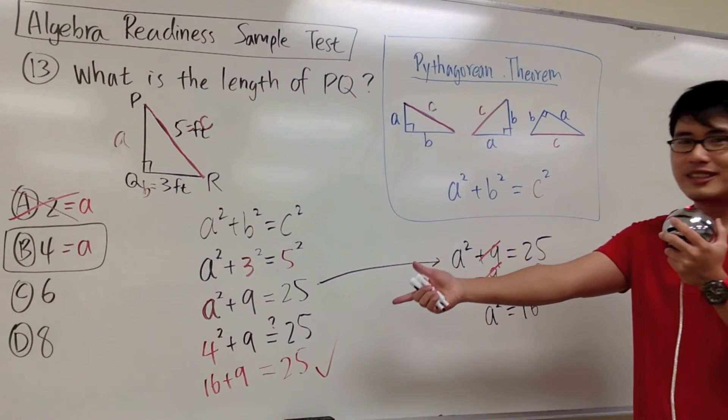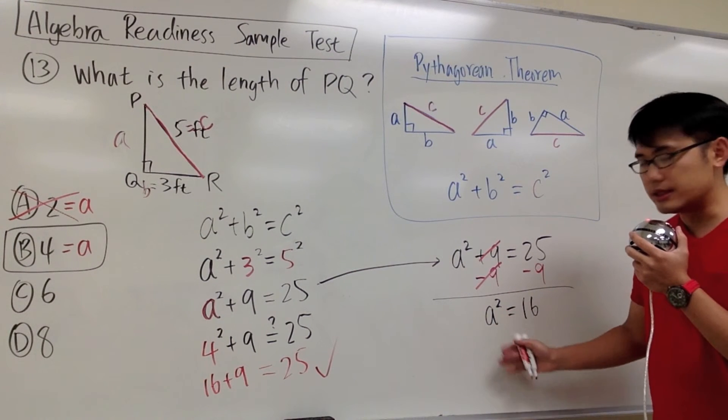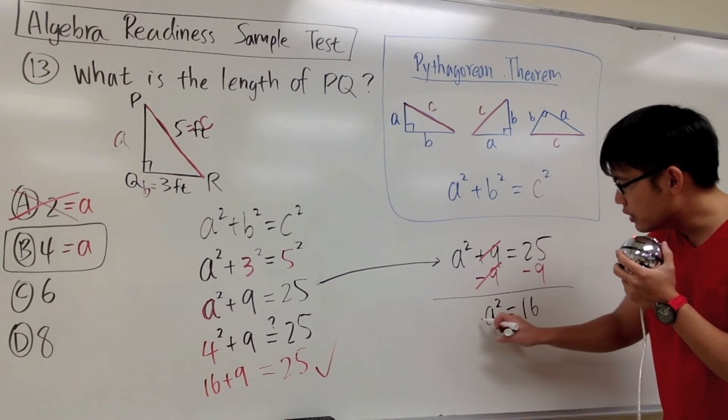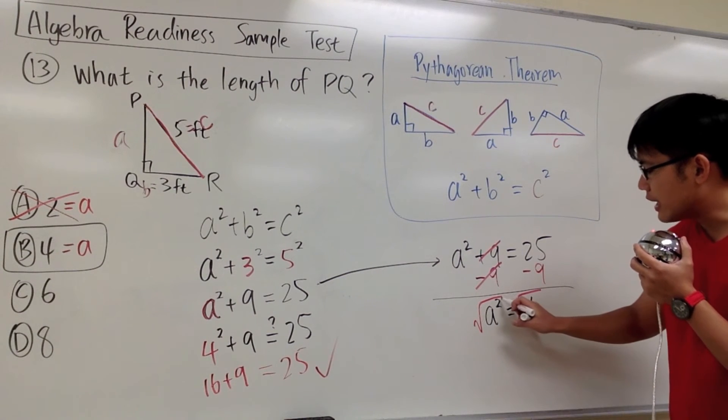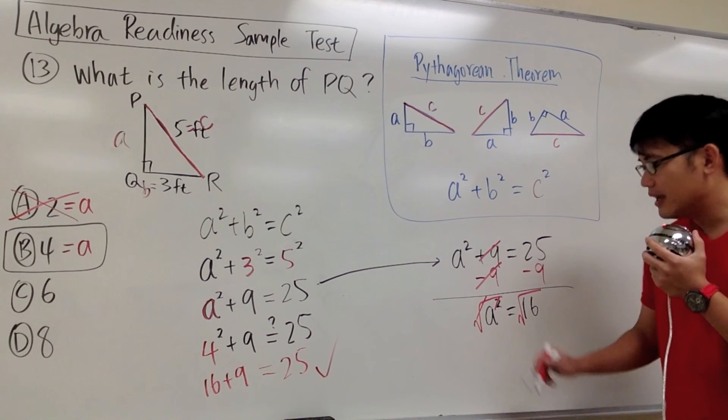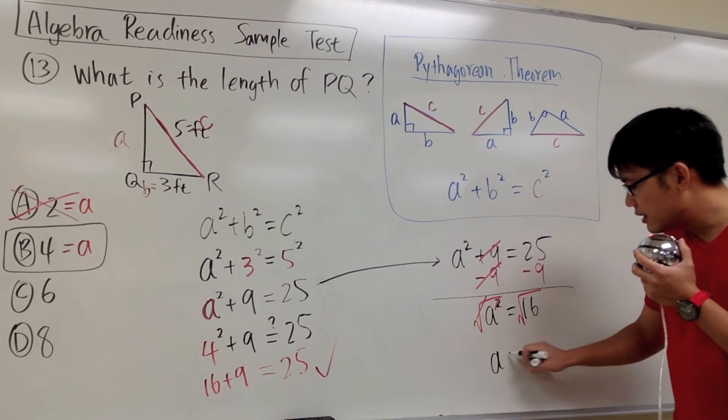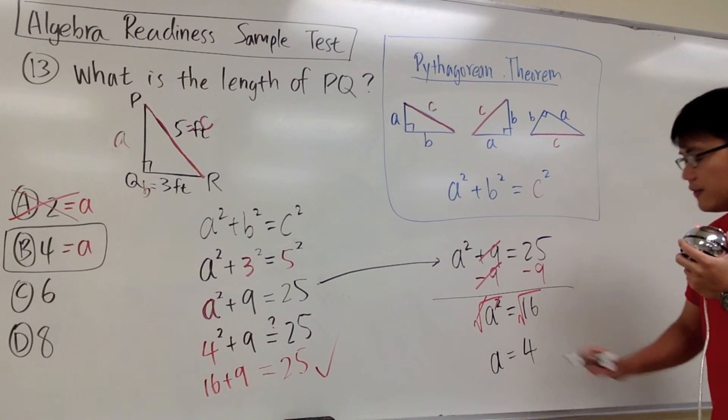That's pretty much the same as what we got over there as well. But the procedure for doing so is, to get rid of the square, we take the square root on both sides, so that the square and the square root can be cancelled on the left-hand side. Then we can end up with A is equal to square root of 16, that will give us 4.